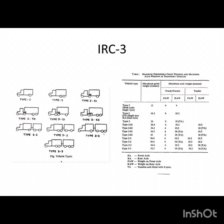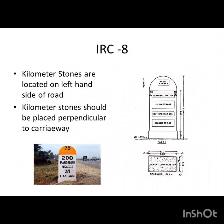Another aspect is kilometer stones on national highways. Kilometer stones are usually located on the left-hand side. The information provided includes the route, the terminal station, the kilometerage, and the next important station with its kilometerage.